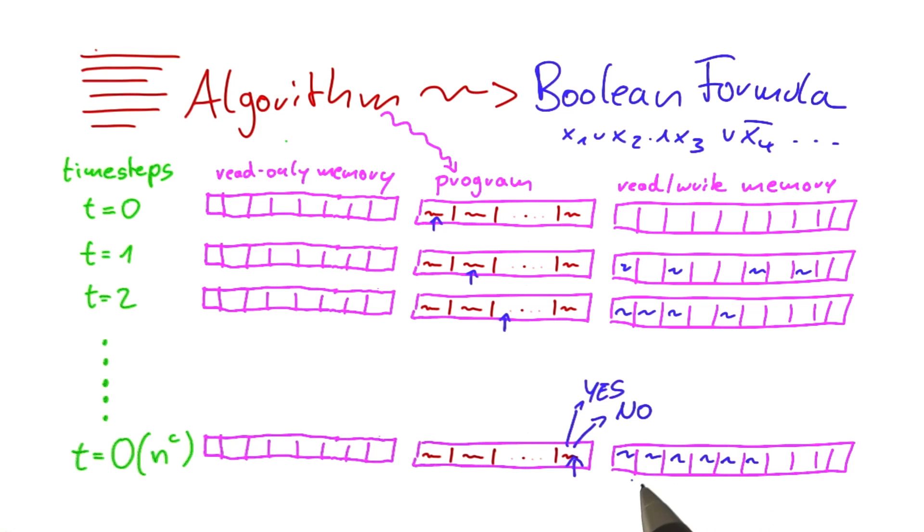We would care about that if we were solving the optimization problem or want additional information. But actually, for a decision problem, it would just be important for us to know at which line of code the algorithm finishes. If it finishes at a return statement that will return yes to us or a return statement that will return no to us.